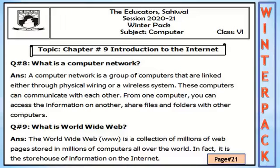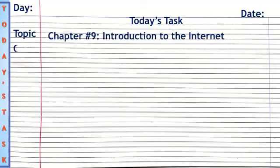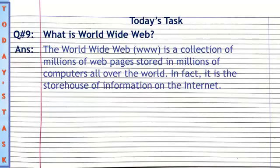Question number 9: What is the World Wide Web? The World Wide Web (WWW) is a collection of millions of web pages stored in millions of computers all over the world. In fact, it is the storehouse of information on the internet. Open your notebooks, prepare your pages, write today's date, and copy question 8 and question 9 with answers from winter pack page number 21.